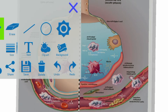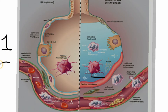Now, in normal alveoli there are macrophages. Whenever there is a toxin or injury, those macrophages get activated. And those activated macrophages secrete interleukin-1, interleukin-6, interleukin-8, and tumor necrosis factor alpha.